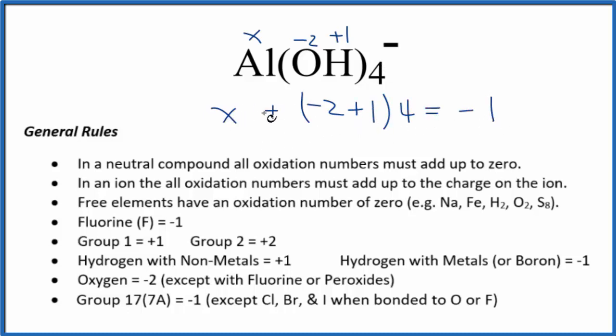So we have X plus -2 and +1, that's -1. -1 times 4 is -4, so we have X - 4 = -1. Adding 4 to both sides gives us X = +3.